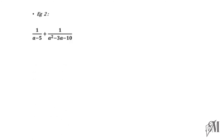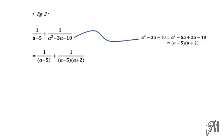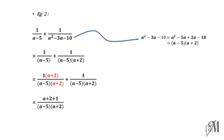Moving on: 1 over (a minus 5) plus 1 over (a squared minus 3a minus 10). The first is a binomial expression; the second is a quadratic that must be factorized. Factorizing a² minus 3a minus 10 gives (a minus 5)(a plus 2). Now a minus 5 is common in both denominators, so a plus 2 must be added to the first fraction. We multiply the first fraction by (a plus 2) to give both fractions the common denominator (a minus 5)(a plus 2). Removing the bracket in the first fraction gives a plus 2 plus 1, so the final answer becomes (a plus 3) over (a minus 5)(a plus 2).